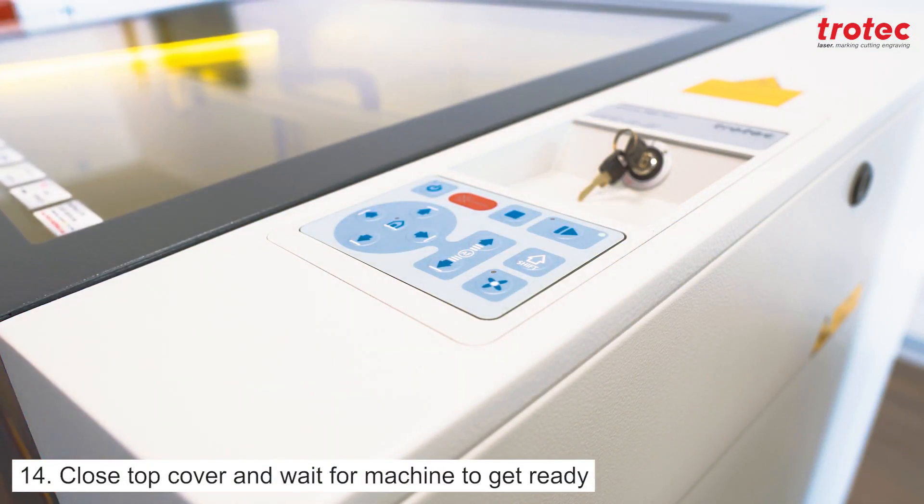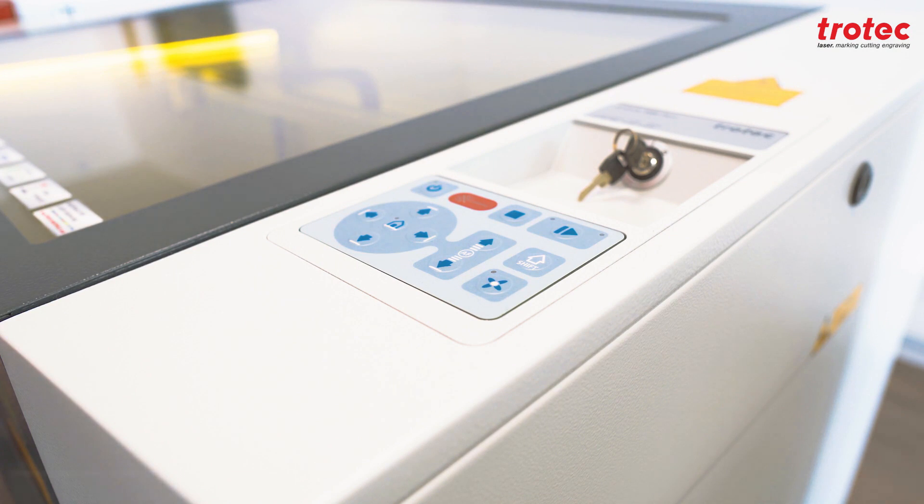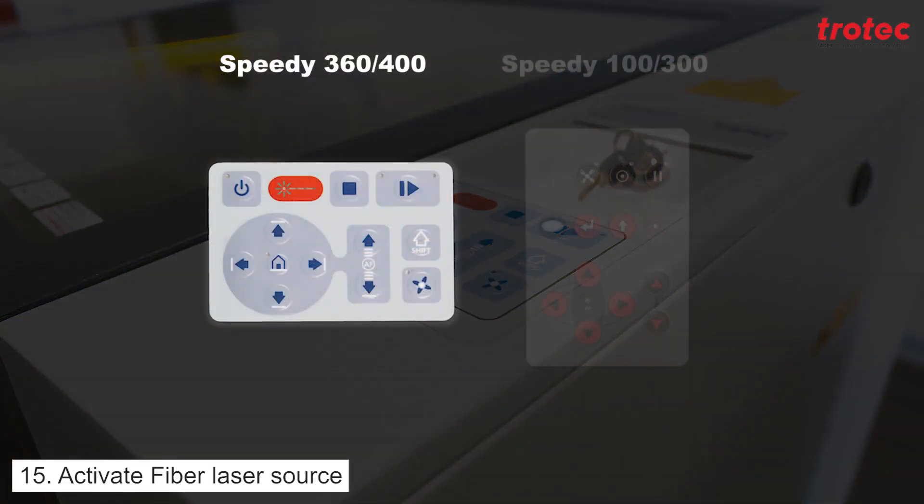Close the machine cover and wait for the machine to get ready. For the speedy 360 or 400 to activate the fiber laser source press the standby button here. Then press the y-axis arrows simultaneously.